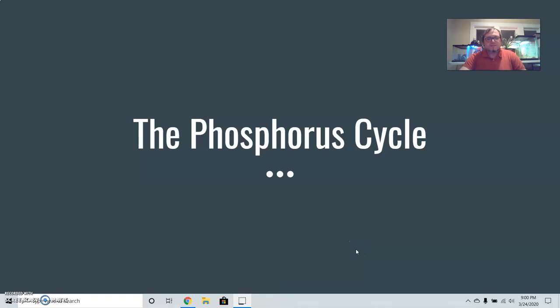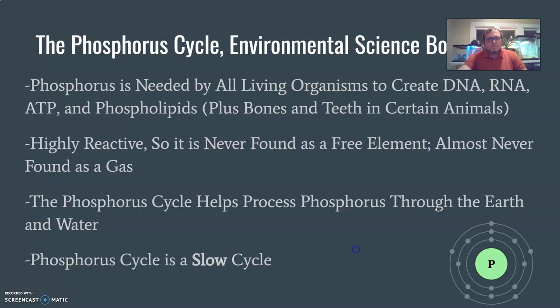We're going to do our overview of the phosphorus cycle, another one of our geochemical cycles. This one is a little bit different from a lot of the ones that we've discussed in that it's a slower cycle. This actually resembles the slow carbon cycle more than it resembles some of the other ones that we've discussed.